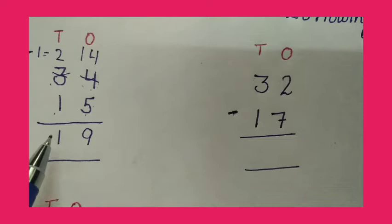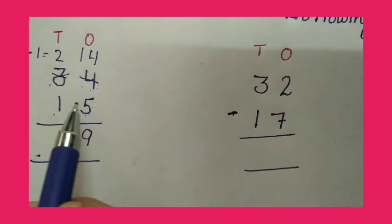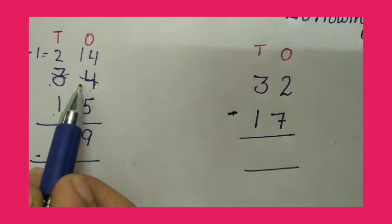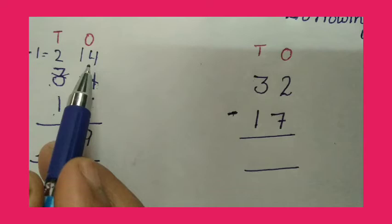So students, you will understand this. When we have a small number here, we will borrow 1 from the 10th column. We will add 10 in the 1's column.